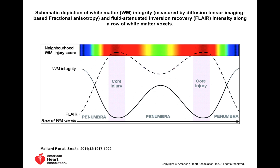Mallard et al. had a diagram showing that the core region is where the FLAIR image is very bright. But beyond the FLAIR brightness region, there may be an area just outside referred to as the penumbra. In these cases, there might be a decrease in the FLAIR value, but damage may still be occurring. They proposed looking at white matter integrity through FA values as an indication of that, and calculated a neighborhood white matter injury score — a weighted version using both metrics as well as proximity to the core of the injury.